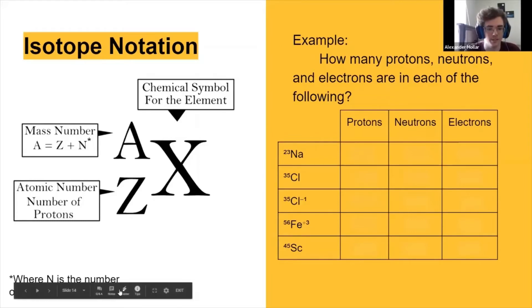So we would have our base element here, which is X, and then to the top left here we would have the mass number, which is equal to the number of protons plus the number of neutrons. The number of protons is represented by this Z, which would go in the bottom left here.